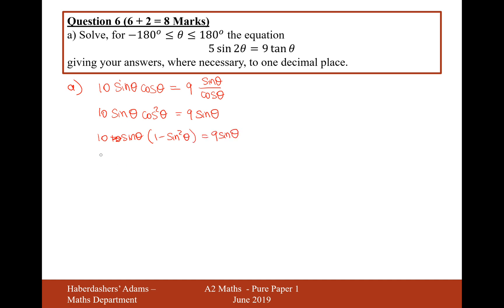So expand the brackets. That's going to be 10 sin θ minus 10 sin³ θ equals 9 sin θ. And you may be tempted at this point to cancel that sine. Please do not do that. I'll show you what you need to do.